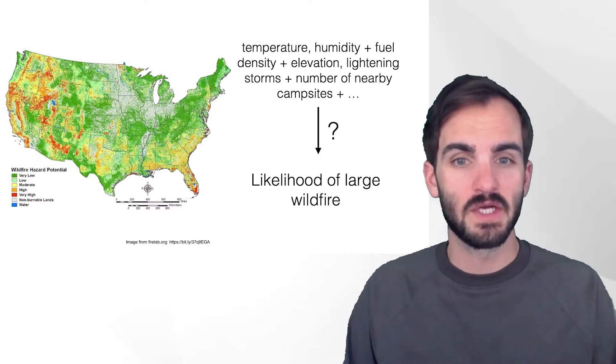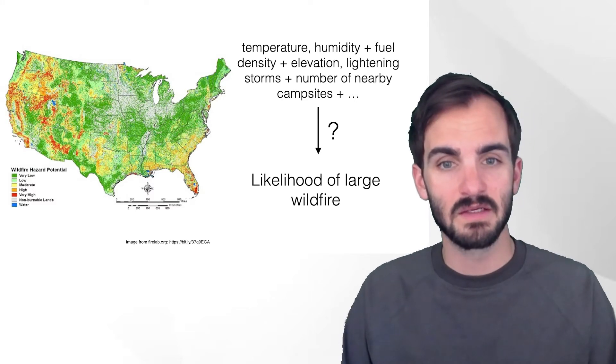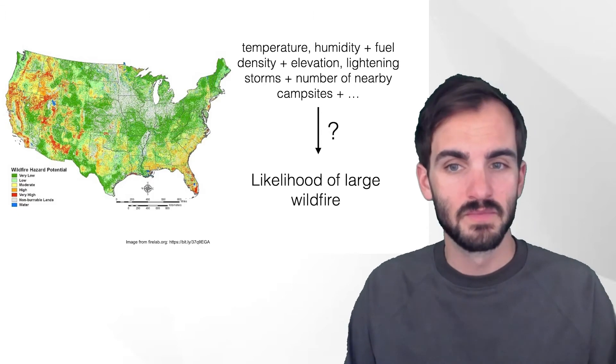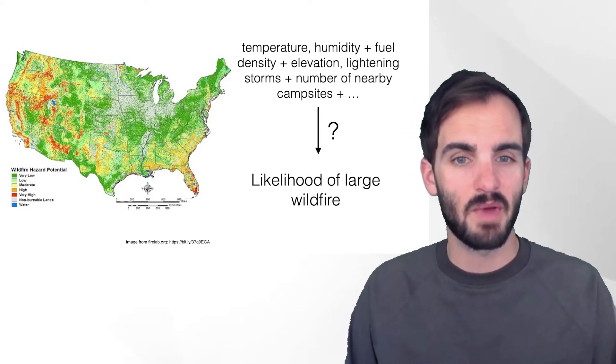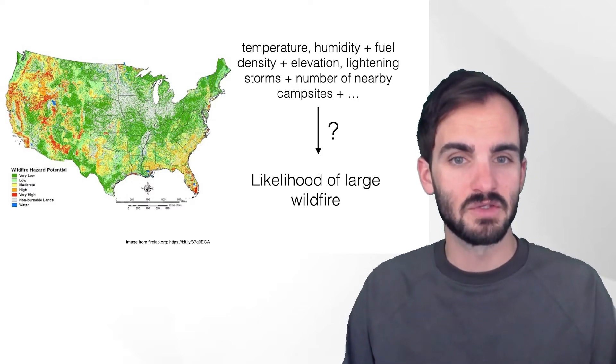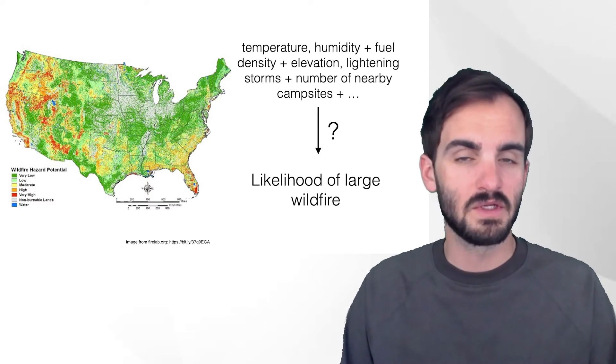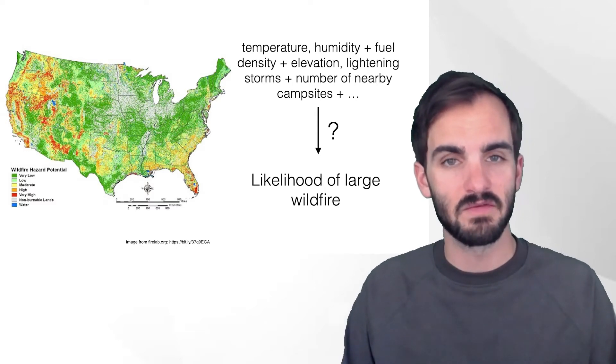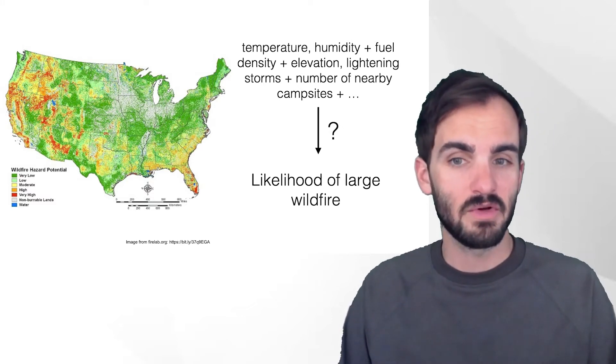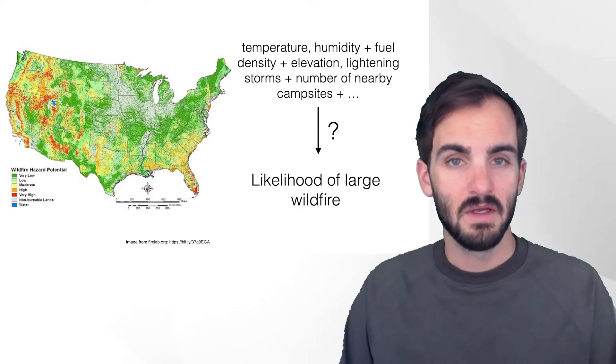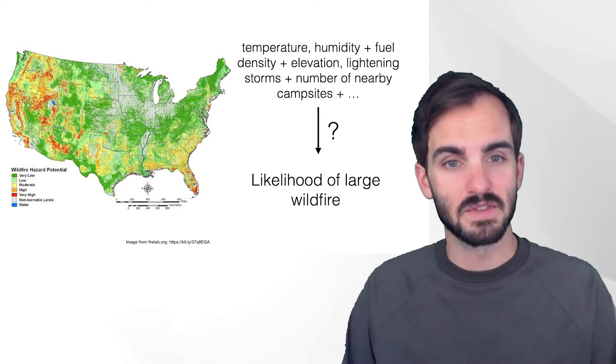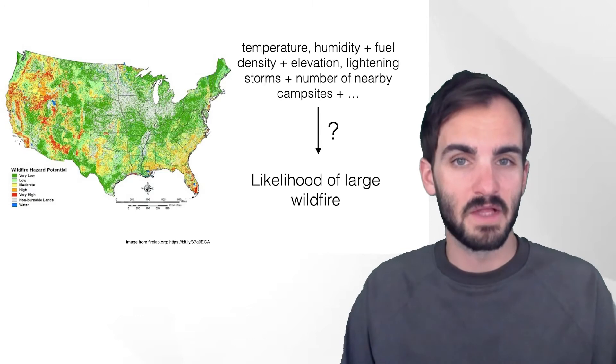So some important questions that statisticians and data scientists might ask in the context of a statistical model might be, which input should we include? For example, does elevation really impact the likelihood of a wildfire? That can be a tricky question to answer, but there are techniques to try to decide which variables should be included in the model and which can be safely excluded. We might also ask, how does a specific change in one input variable impact the output? So if we increase temperature by 10 degrees and keep all other inputs the same, how could that impact the likelihood of a fire?